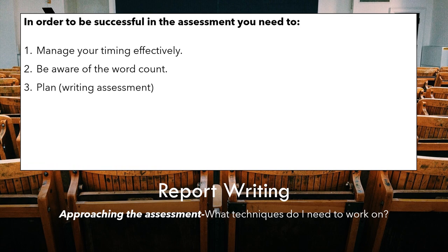Number three: plan your writing assessment. One of the issues is that people don't plan effectively. A way to make sure you're planning effectively is to think about what you need to include in order to get a decent mark. The main things to think about are what techniques you can use to persuade the reader towards your point of view. I would have the DeForest techniques written down the side of my page and tick them off as I go, to make sure I'm including each technique in my writing.